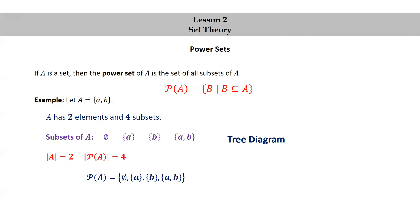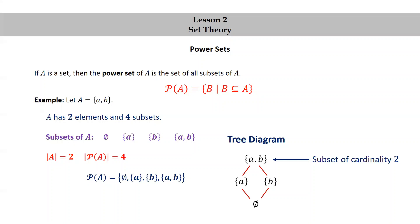Let's draw a tree diagram for the subsets of capital A. It looks like this. At the top of the tree diagram, we have the only subset of cardinality two, the set consisting of a and b. Underneath that, we have the subsets of cardinality one, set a and set b, and at the bottom we have the only subset of cardinality zero, the empty set.